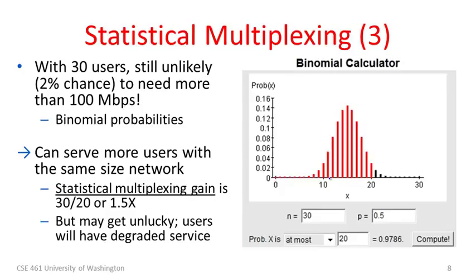The snapshot on the right shows a binomial calculator where I've filled in the parameters. For 30 users, this graph shows the probability that a different number of users — shown on the x-axis — will want to use the network. The number of users most likely to be active is 15, which is what you'd expect given 30 users each with a 50% chance of using the network. The probability that all 30 users are using the network simultaneously is one-half to the 30th power — less than one in a billion. Similarly, the probability that no one is using the network is also one in a billion.